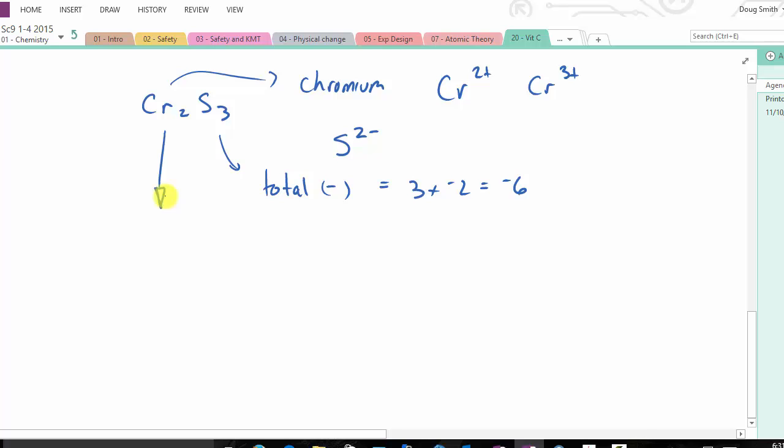If I look at this one, I can see that I have 2 times something should equal +6 then, because I have to balance the positives and the negatives. So the answer to this guy would be 3+. So that means I'm dealing with the Cr3+. So the name of this compound would be chromium(III) sulfide. So that's naming with multivalent metals.